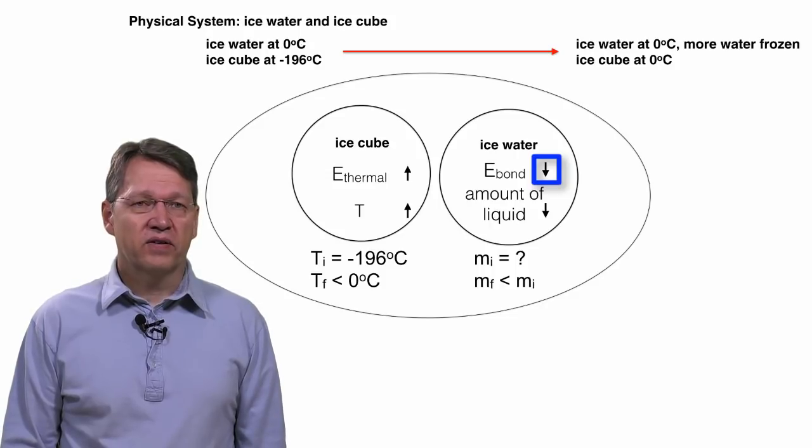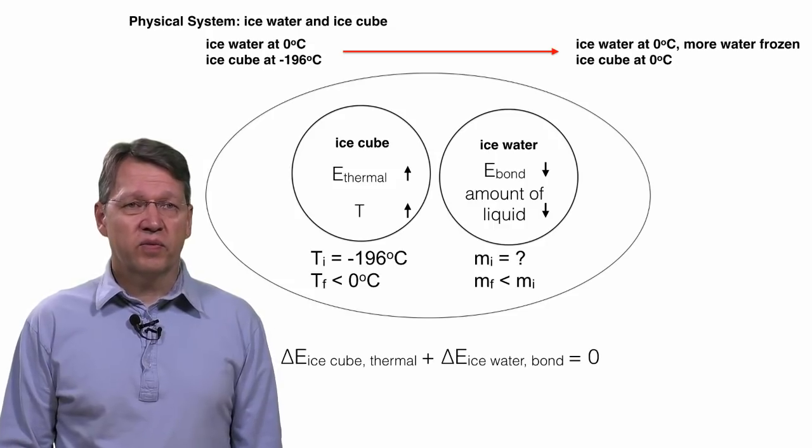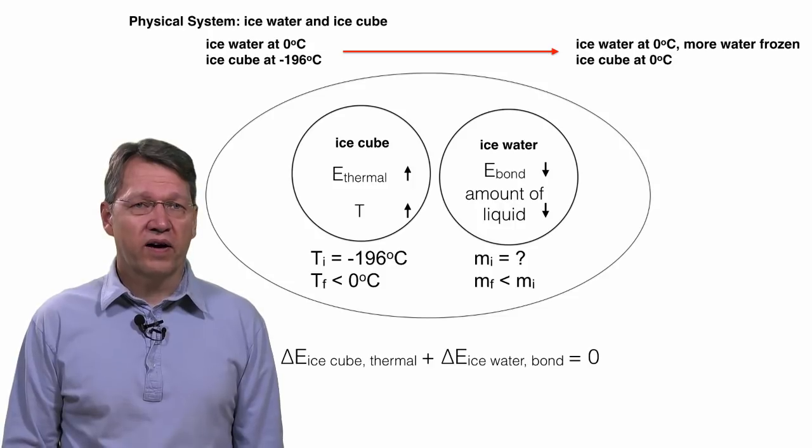Finally, we can give a mathematical summary by writing an equation that expresses the conservation of energy for this case. The change in the thermal energy of the ice cube plus the change in the bond energy of the ice water have to add up to zero.